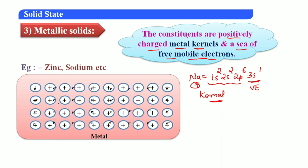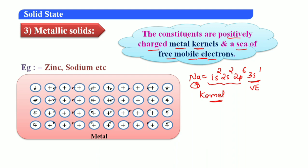The metallic bond is formed because valence electrons are delocalized from their original positions to other atoms. Each electron delocalizes to neighboring atoms, creating a metallic bond. This type of force of attraction is present in metallic solids. All metals — such as zinc, sodium, etc. — are examples of metallic solids. The positively charged core is called the metal ion or kernel.